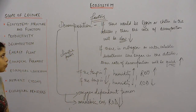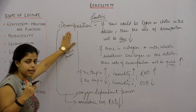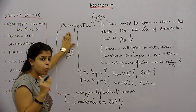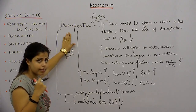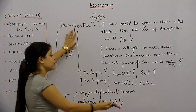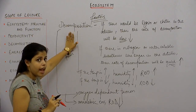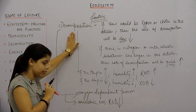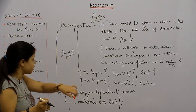There are also climatic factors. For example, if the temperature is high and the humidity level is also high, then the rate of decomposition — ROD — will also be high. If the temperature is low and the humidity is also low, then the rate of decomposition will also be low. Decomposition is an oxygen-dependent process, so if there is an anaerobic environment, the rate of decomposition will slow down.